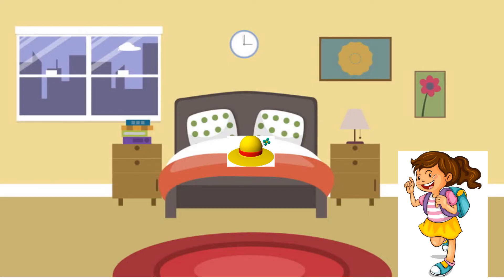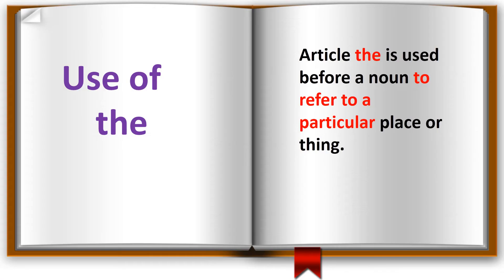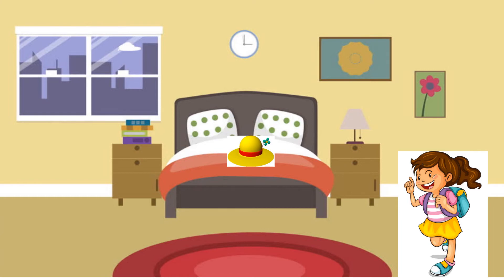I hope you all still remember our friend Ira. She has almost finished packing her bag, but she forgot to take the hat that her aunt gave her on her birthday. The article 'the' is used before a noun to refer to a particular person, place, or thing. Ira had to pack the yellow hat that her aunt gave her on her birthday. Here, 'the yellow hat' refers to a particular hat that her aunt gave her, and no other hat. So we say 'the hat'.